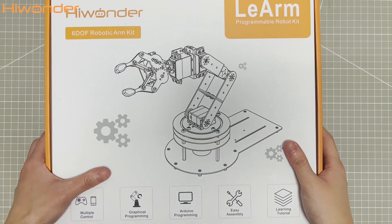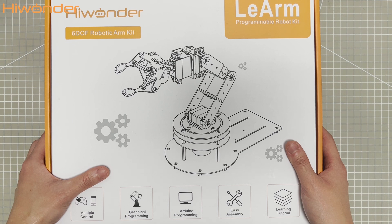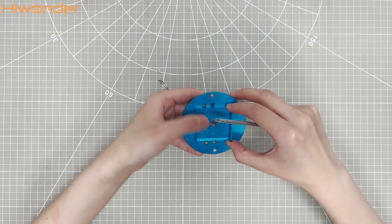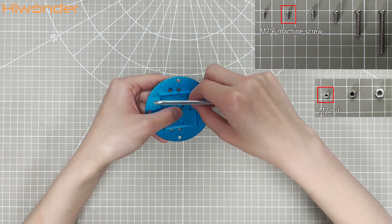Hey everyone, in this video I'm going to take you through the process of assembling the LeArm. Let's start with the first step, assembling the rotating base. Firstly, attach this bracket to the small round bracket using screws and nuts.